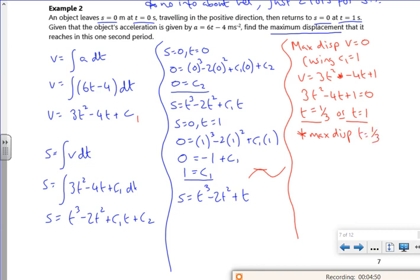So what I should really do is check my s equals for both numbers. So for t is a third, it gives me an s value of, so using that equation there, it gives me a value of 0.148 meters. There we go. So because it was a cubic, my maximum displacement would happen at the first t value.